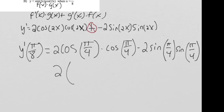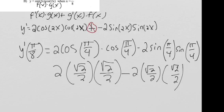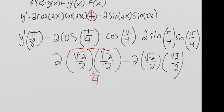Now let's simplify. Cosine(π/4) is √2/2, and cosine(π/4) again is √2/2. Minus 2 — sine(π/4) is also √2/2, and sine(π/4) is √2/2. If we do √2/2 times √2/2 we get 2/4, so we're doing 2 times 2/4, which is 4/4, which is just 1. Over here, same thing: √2/2 times √2/2 is 2/4, multiply by 2 and we get 1 again. So our slope is actually 0.